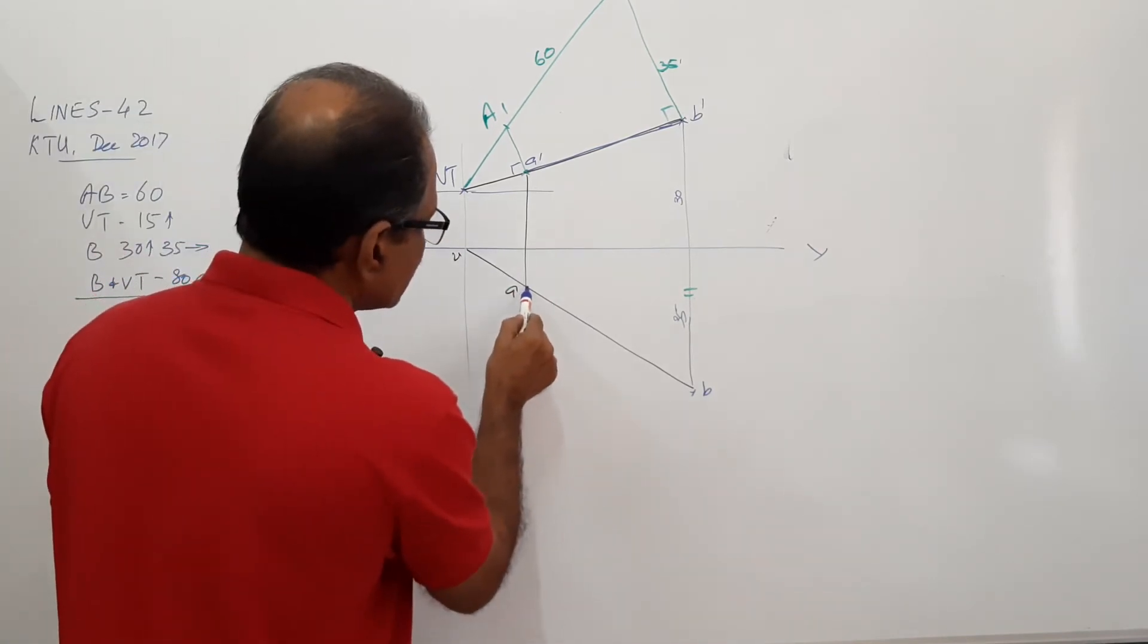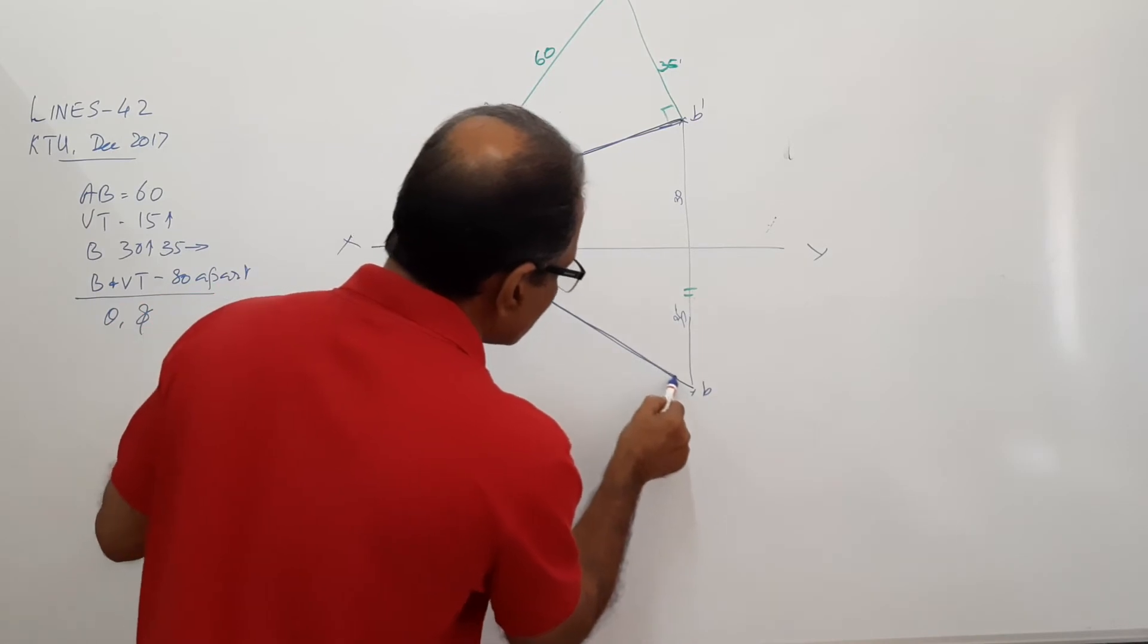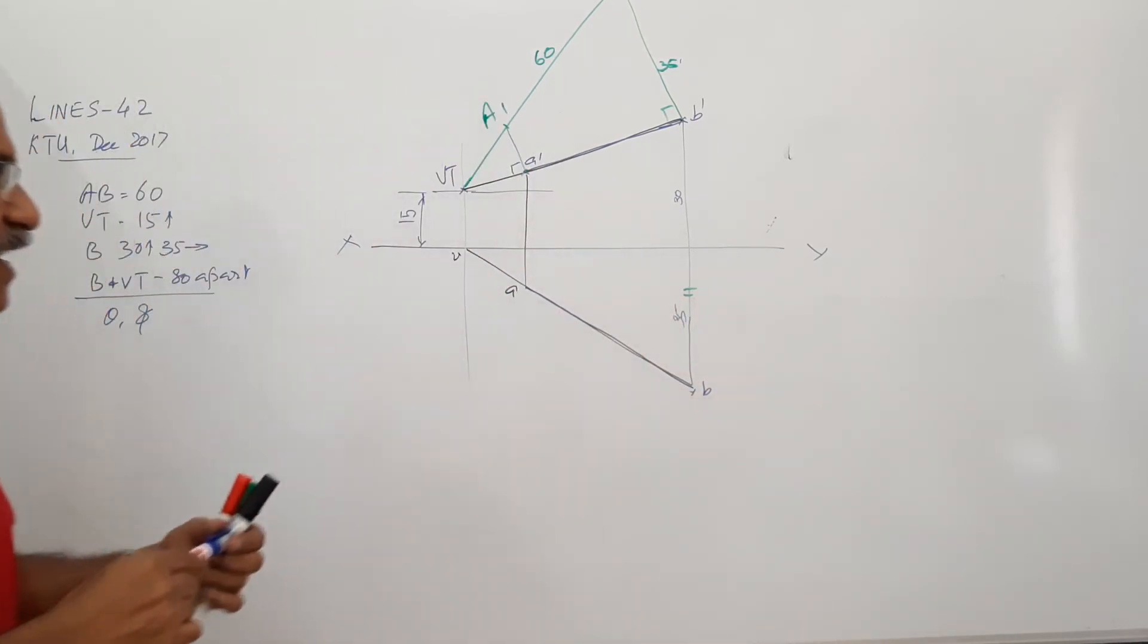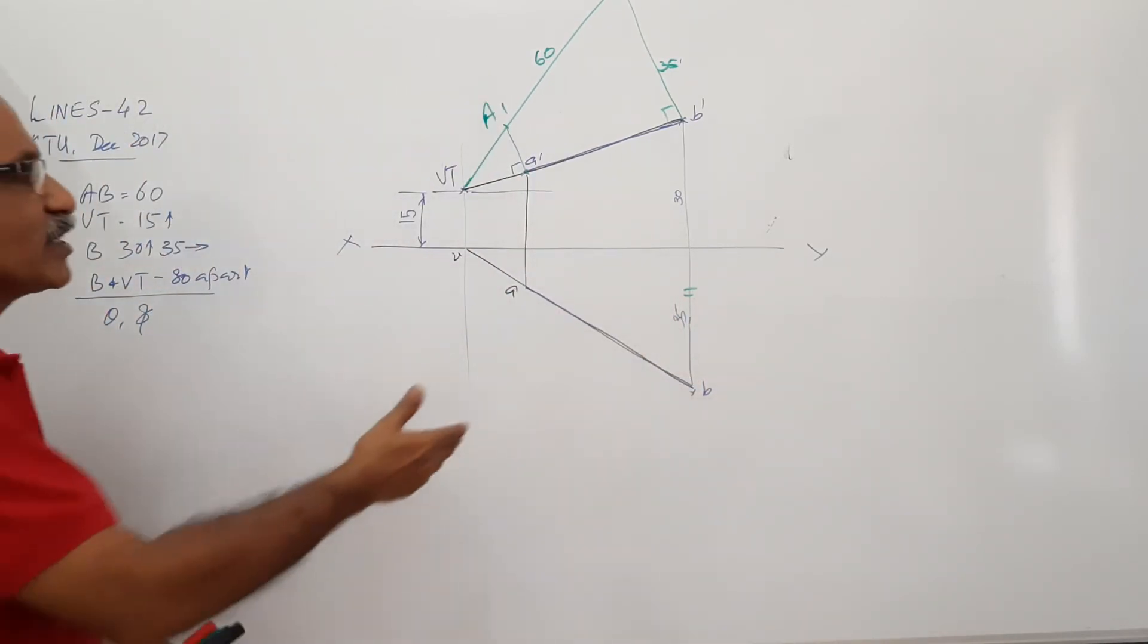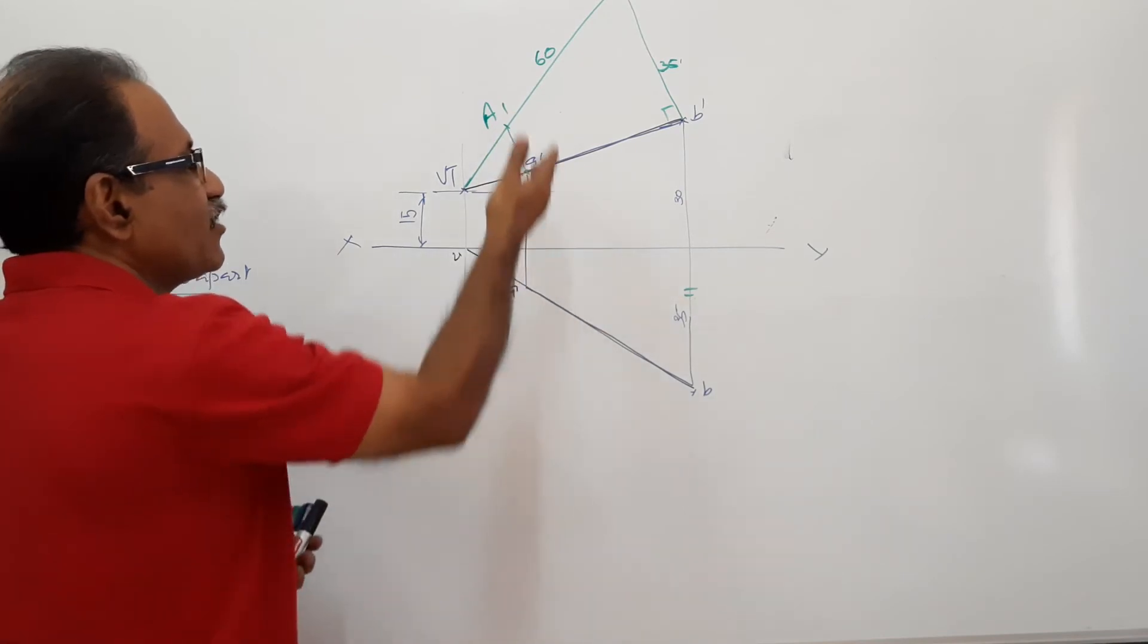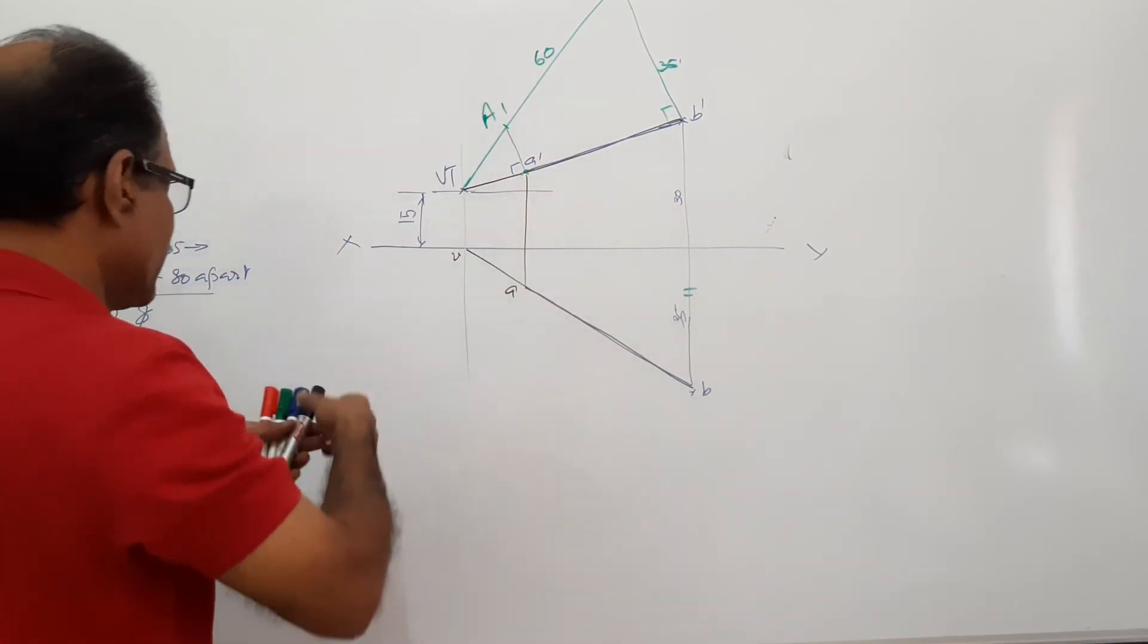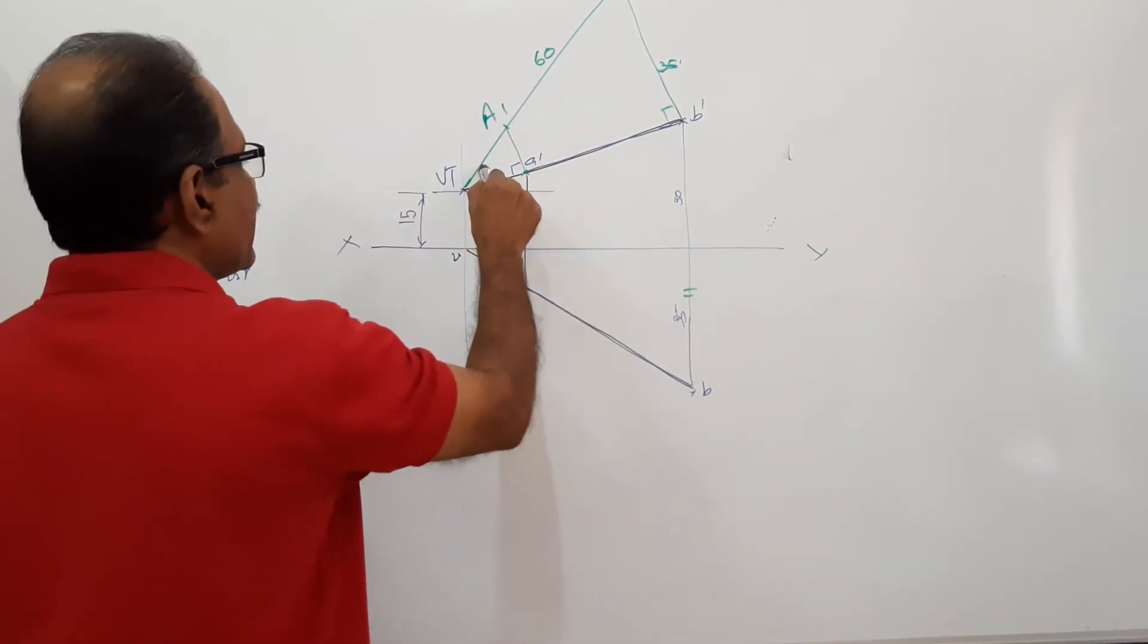What is this? This is the plan of the line. You have got the elevation of the line. You have got the plan of the line. You have got the true length there. You have got theta here, I mean, phi here. This is phi actually.